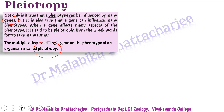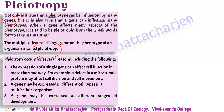What are the possible reasons for pleiotropy? The expression of a single gene can affect cell function in more than one way. For example, a defect in a microtubule protein can affect both cell division and cell movement — one gene controlling both. A single gene may be expressed in different cell types in a multicellular organism, and depending on the internal microenvironment of the cell, the gene will function accordingly. A single gene may also be expressed at different developmental stages, controlling different developmental phases.